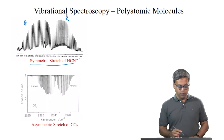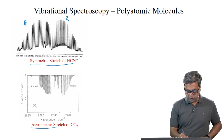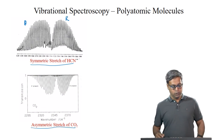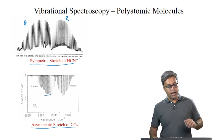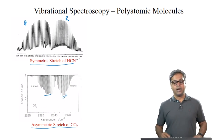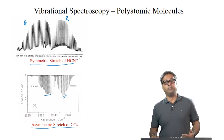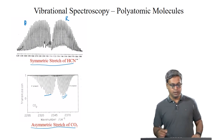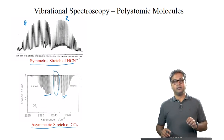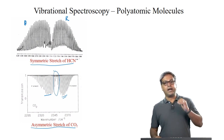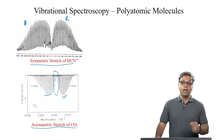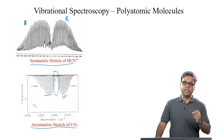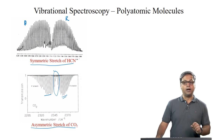Here is another spectrum for the asymmetric stretch of carbon dioxide. On the left we have the P branch, and on the right at higher frequencies we have the R branch. There is a missing line in the center because that would be a transition for ΔJ = 0. Again we have a PR band profile, so this has to be a parallel vibration.